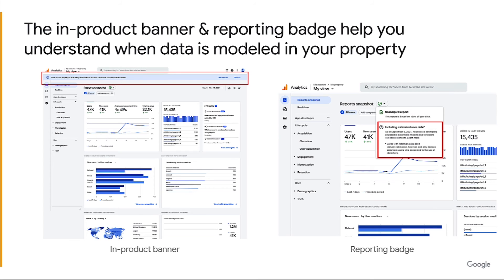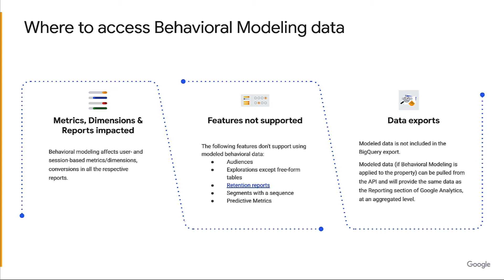Now let's talk about what this actually looks like in the product. The in-product banner and reporting badge help you understand when data is modeled in your property. The banner will appear at the top of your property's reports and the badge will appear below the green mark if any data is modeled. You can click on the badge to learn more about the modeling process and how it affects your reports. Behavior modeling affects user and session-based metrics and dimensions and conversions in all their respective reports. The following features don't support using modeled behavioral data: audiences, explorations except free-form tables, retention reports, segments with a sequence, and predictive metrics. Model data is also not included in the BigQuery export. Model data, if behavior modeling is applied to the property, can be pulled from the API and will provide the same data as the reporting section of Google Analytics at an aggregated level.